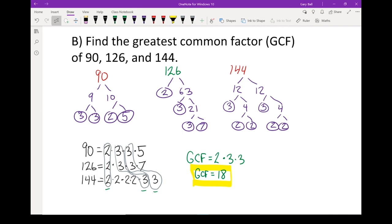So working with three numbers really isn't any different than working with two. You just add one more set of numbers. The same would be true if you're working, finding the greatest common factor of four numbers or five. You just have to do more prime factorizations.